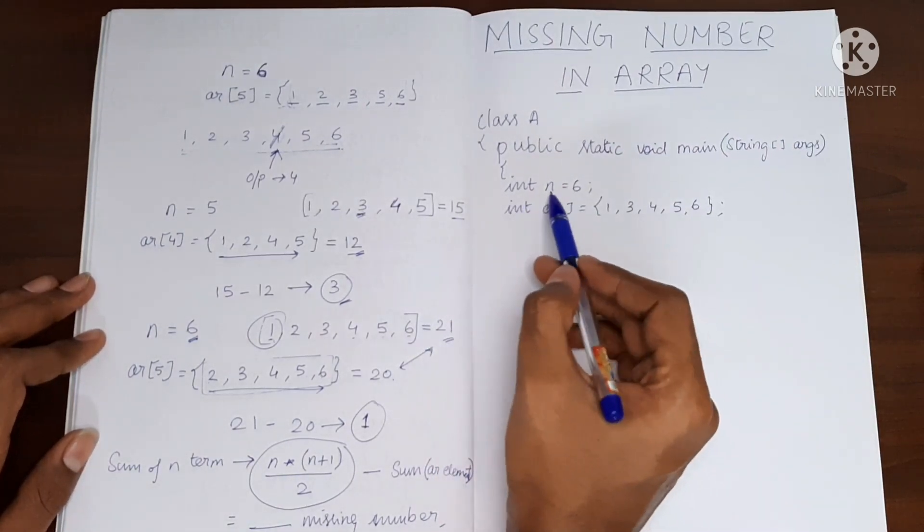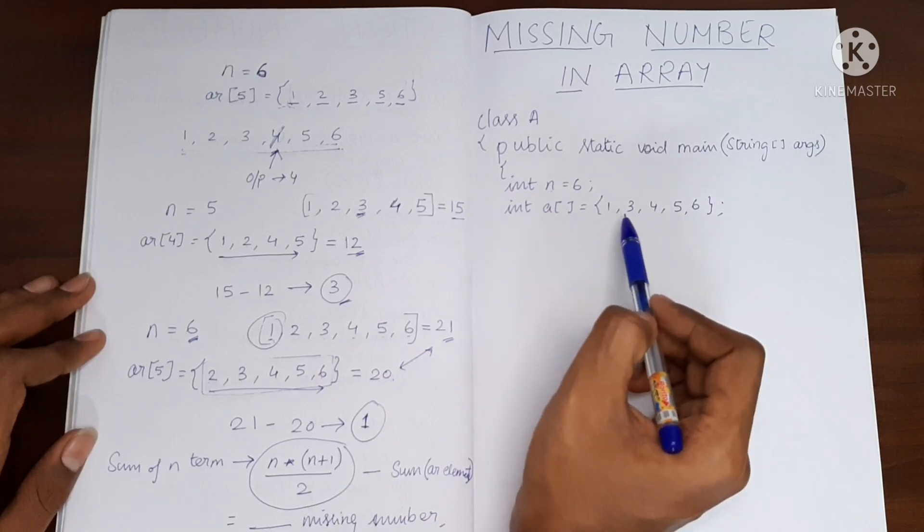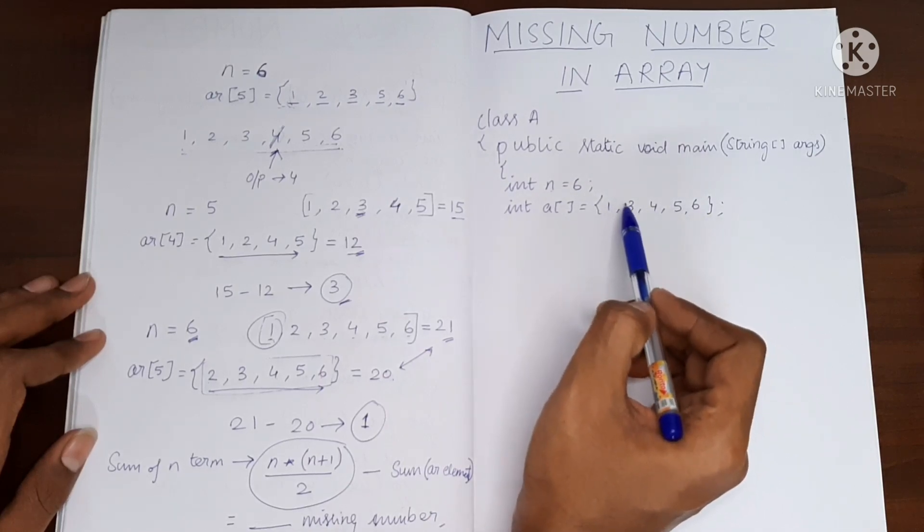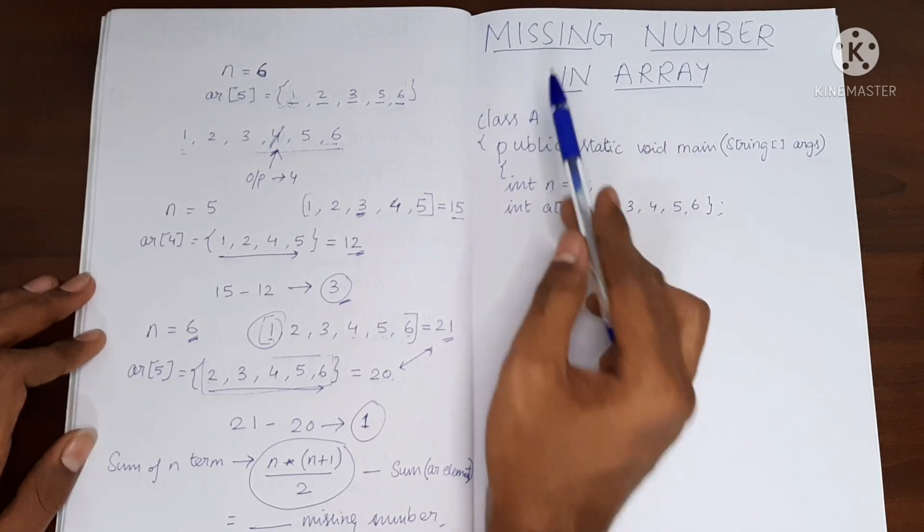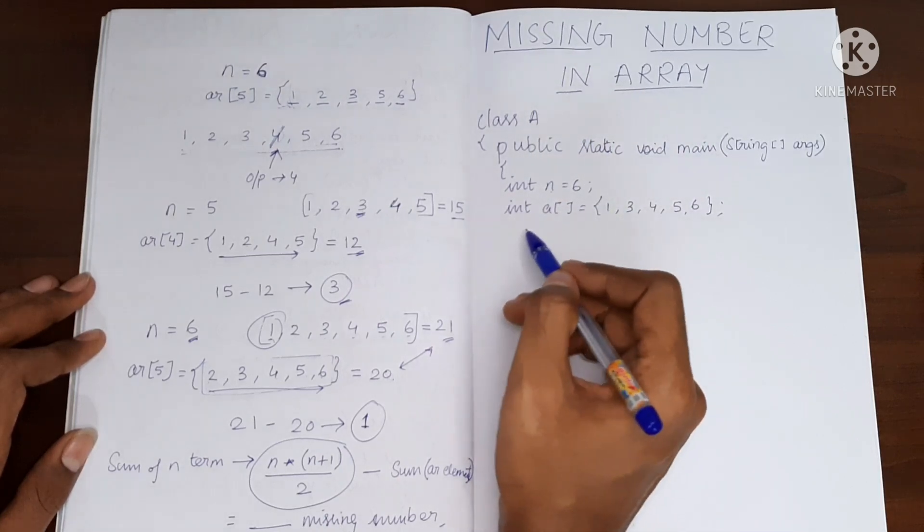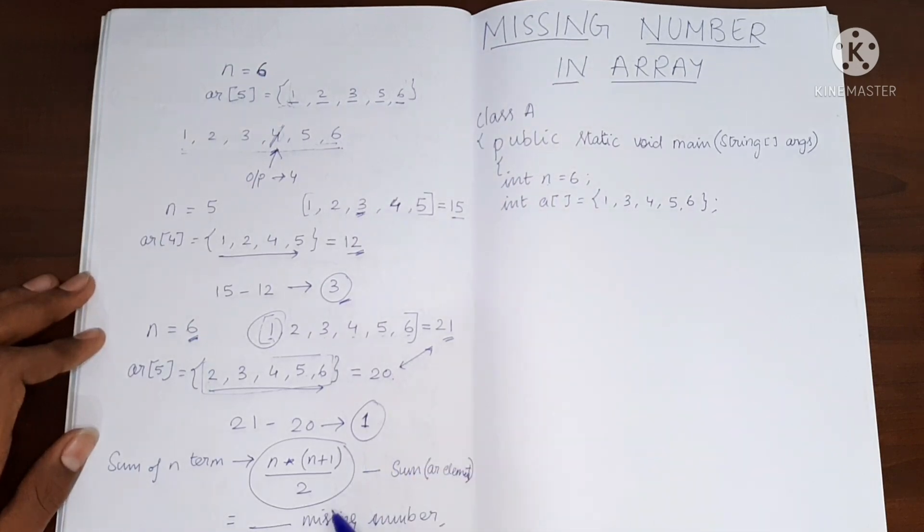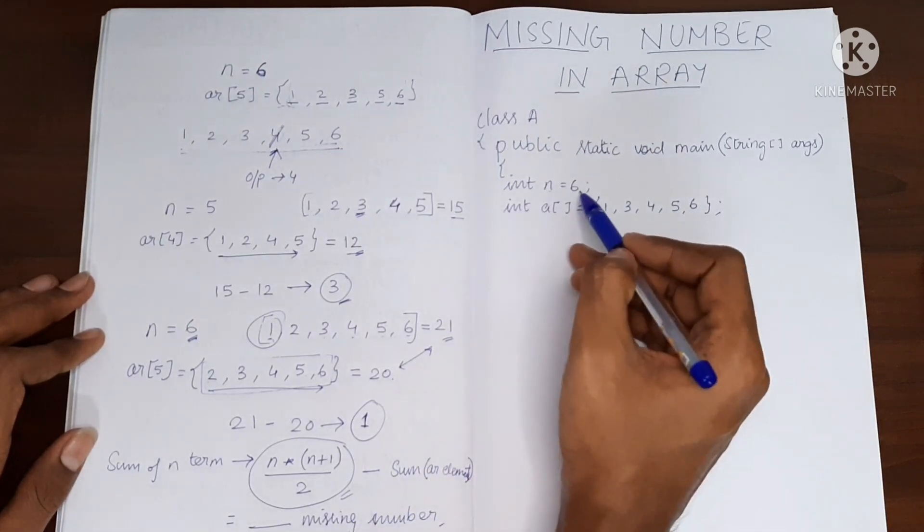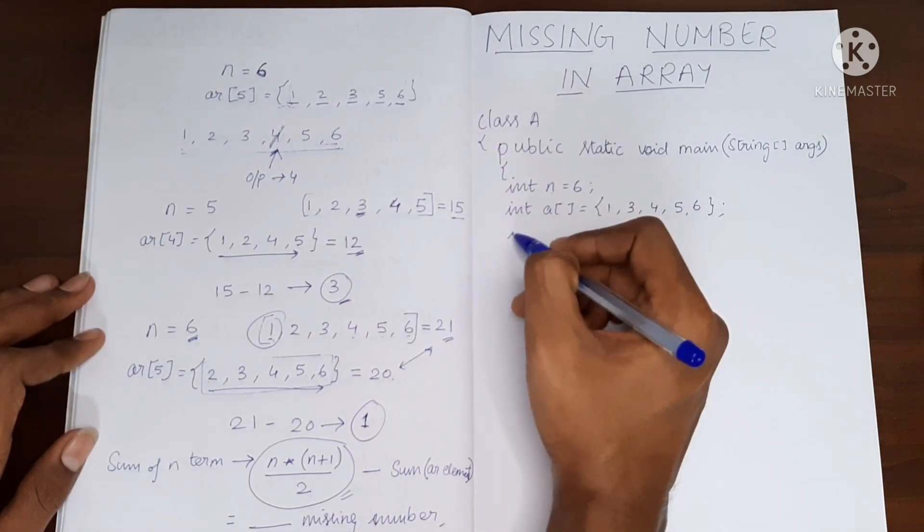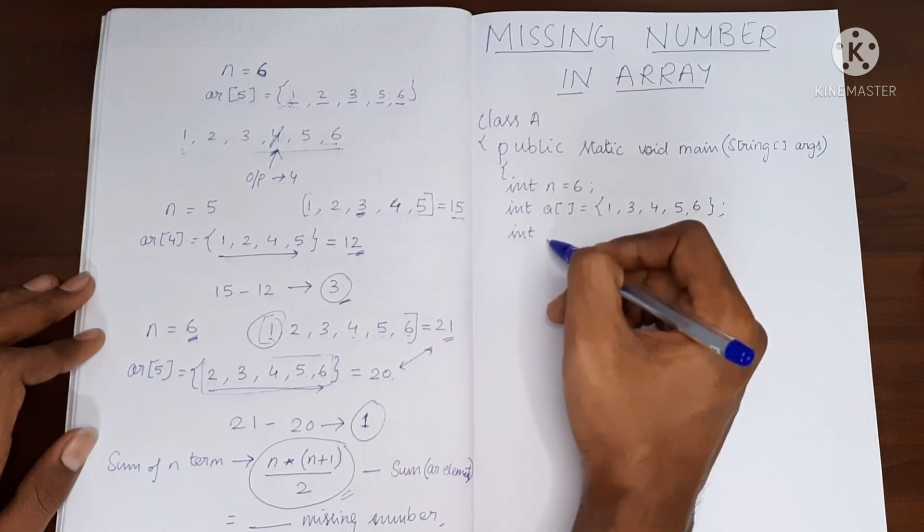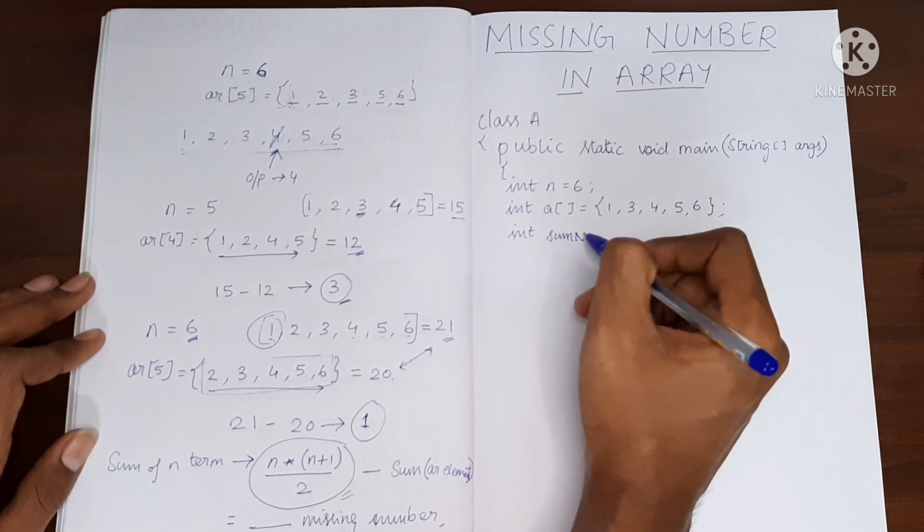So we have the input n as 6 and we have an array of 5 elements. And in this, we have excluded the number 2, and 2 is the missing number which we have to find. So now let's find the sum of n numbers. So n is 6 over here.